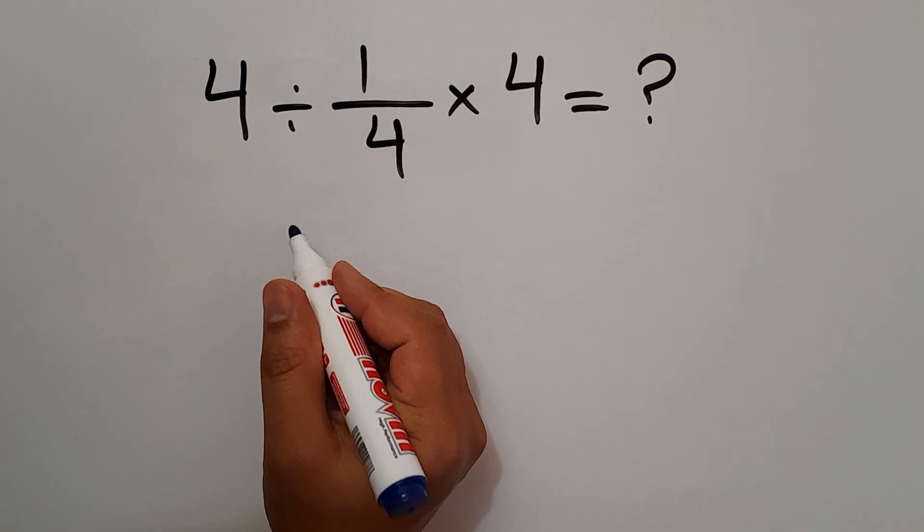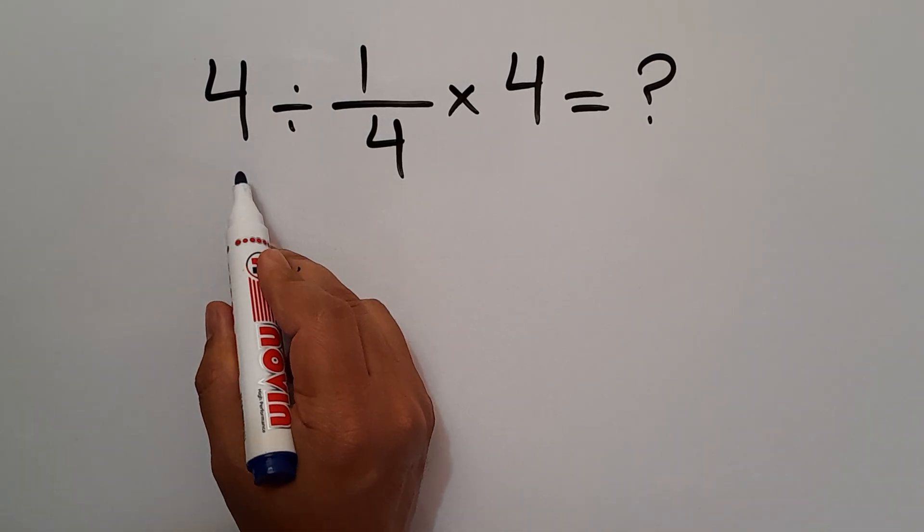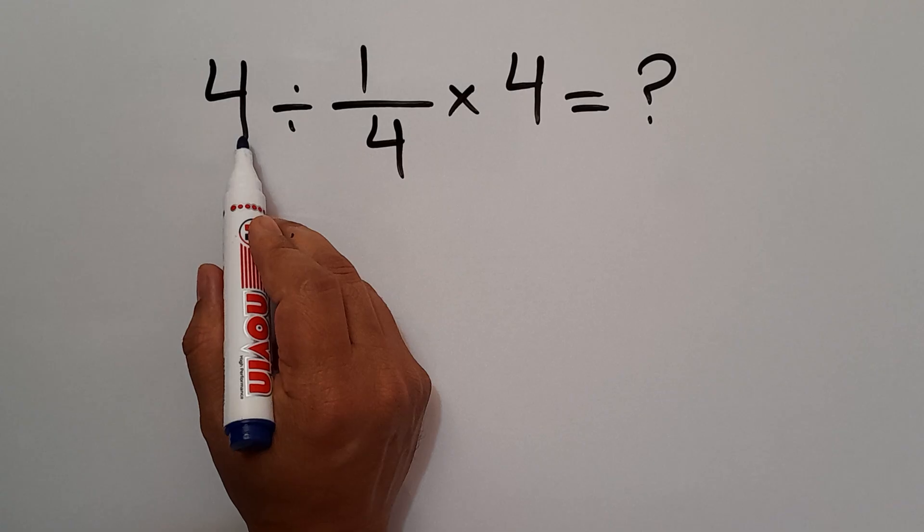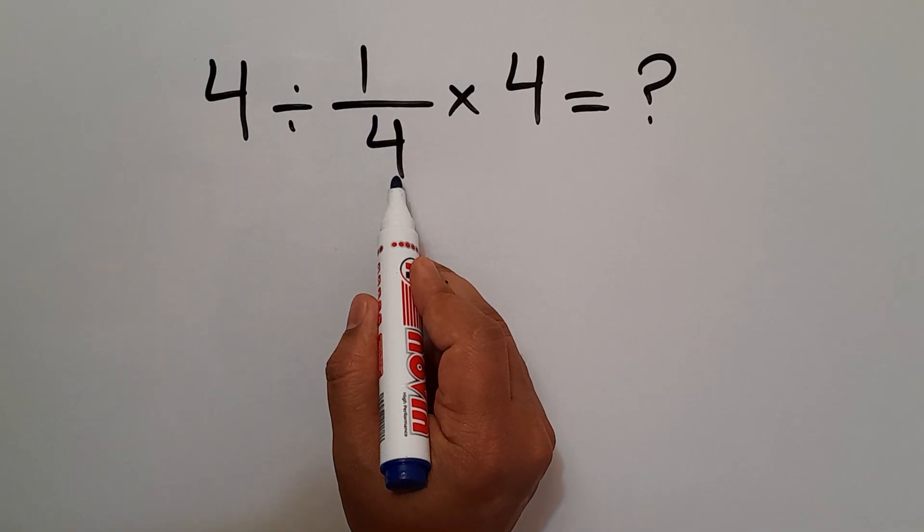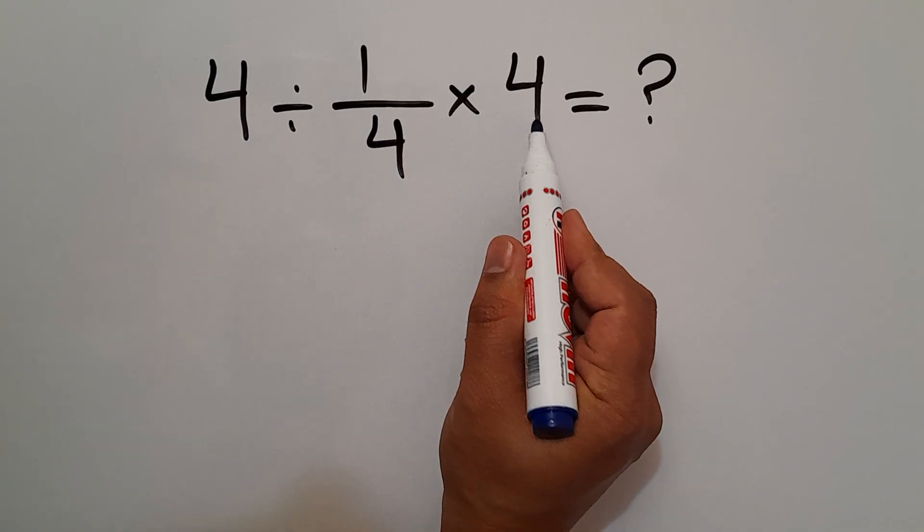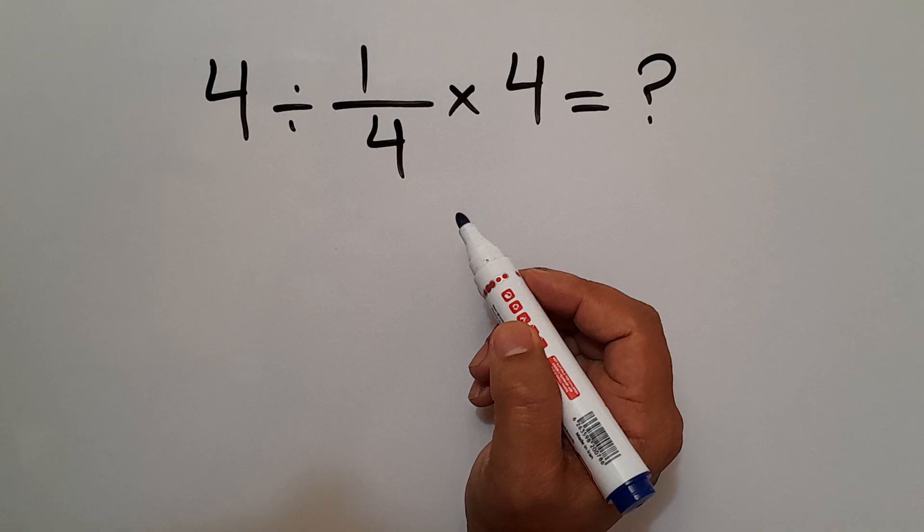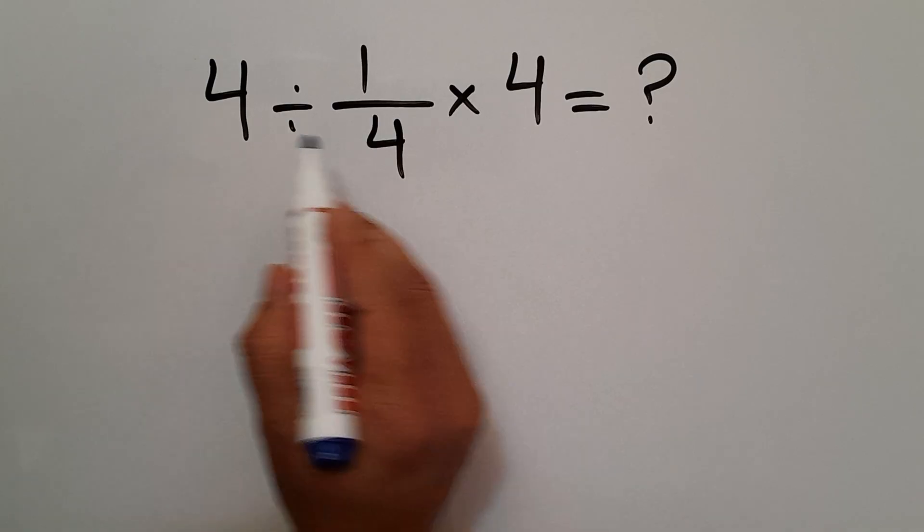Hey guys, welcome to Math Joy. In this video we want to find the value of this expression: 4 divided by 1 over 4, then times 4. Are you ready to solve? Let's go!